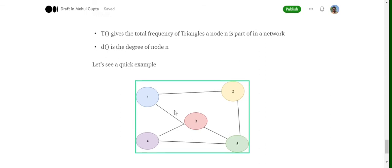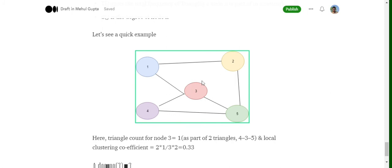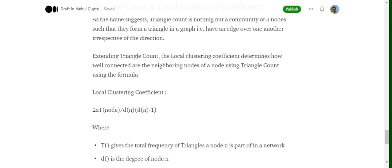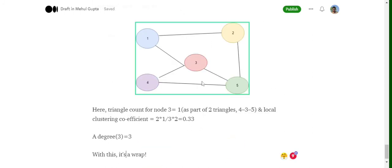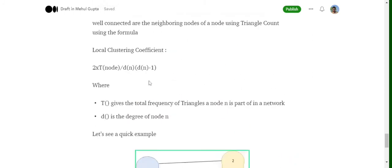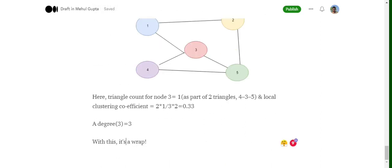Considering the local clustering coefficient for node three, as you can see it is part of just one triangular count. So in this formula, the triangular count becomes one. So two into one upon degree of N, the degree is three because it has three edges. So the formula becomes two into one upon three into two, that is 0.33. So the local clustering coefficient for three is equal to 0.33.